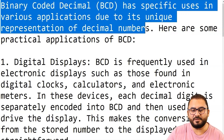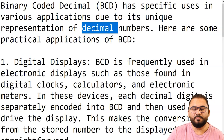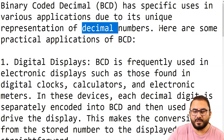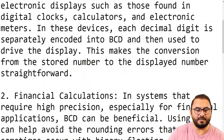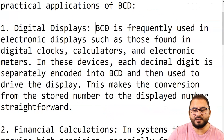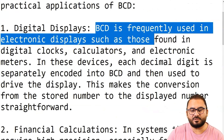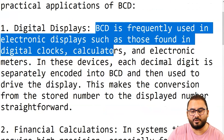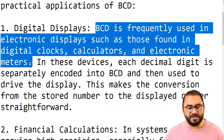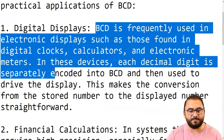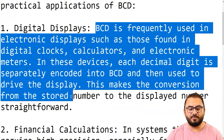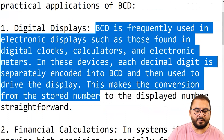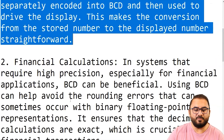BCD's unique representation of decimal numbers — that is, the denary number system — makes it useful in several areas. First, digital displays: BCD is frequently used in electronic displays such as those found in digital clocks, calculators, and electronic meters. In these devices, each decimal digit is separately encoded into BCD and used to drive the display, making conversion from stored number to displayed number straightforward.